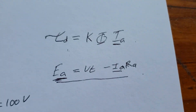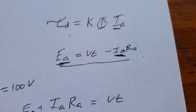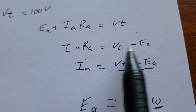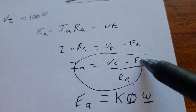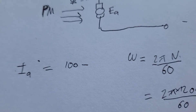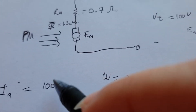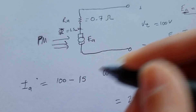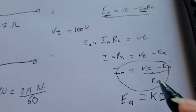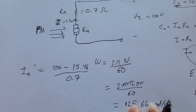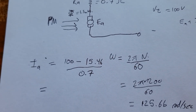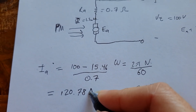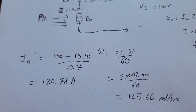Now we can rearrange the equation so that IA is the subject. We bring IA to one side, EA to the other, then divide both sides by RA. So the formula becomes IA equals (VT minus EA) over RA. Subbing in: 100 minus 15.46, over 0.7. We get IA equals 120.78 amps — don't forget the units.